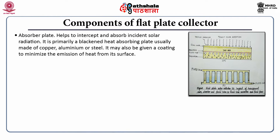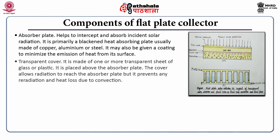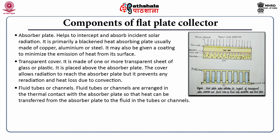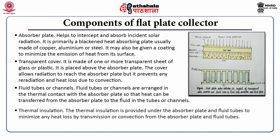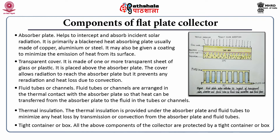The components of a flat plate collector include: the absorber plate, a blackened heat-absorbing plate usually made of copper, aluminum, or steel with a coating to minimize heat emission; the transparent cover of one or more sheets of glass or plastic placed above the absorber plate, which allows radiation to reach the absorber but prevents re-radiation and convective heat loss; fluid tubes or channels in thermal contact with the absorber plate for heat transfer; thermal insulation under the absorber plate to minimize heat loss; and a tight container or box protecting all components. The figures show the layout and fluid tube connections of a flat plate solar collector.